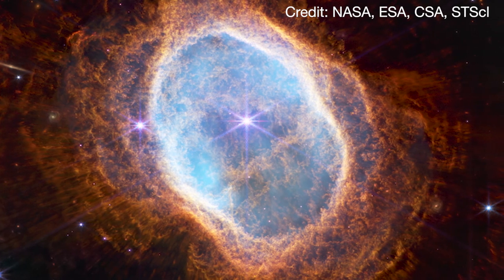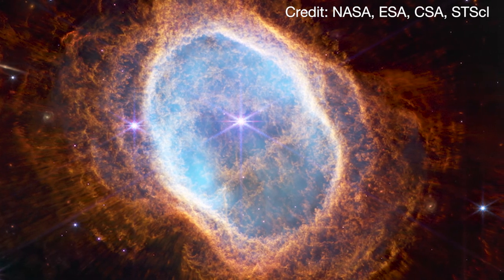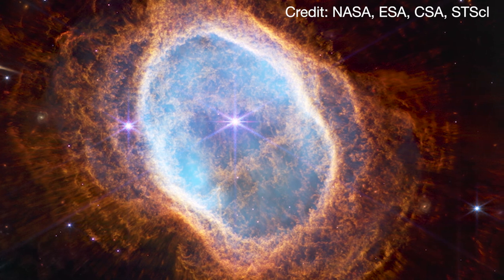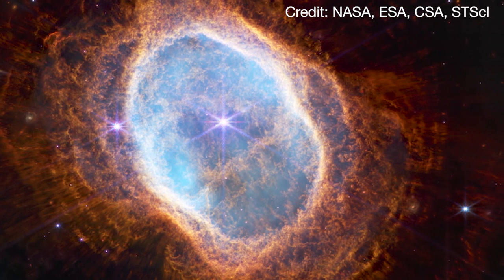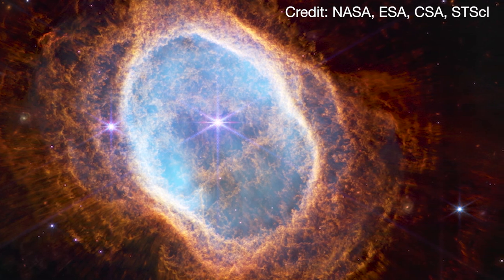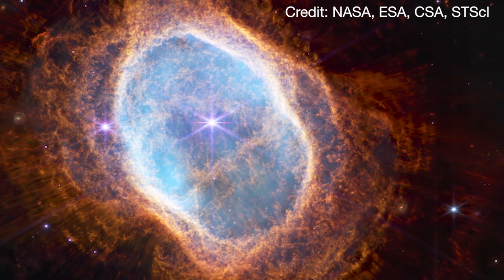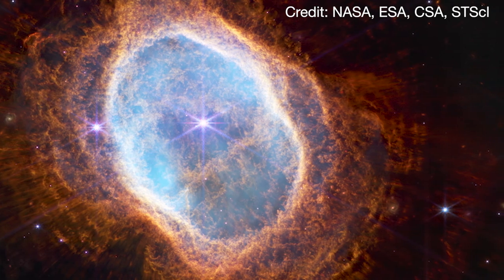The Southern Ring Nebula is an example of what happens when stars like the Sun die. In this case, one member of a binary star system expanded, transferred matter onto a companion star and in that process expelled a bubble of material.